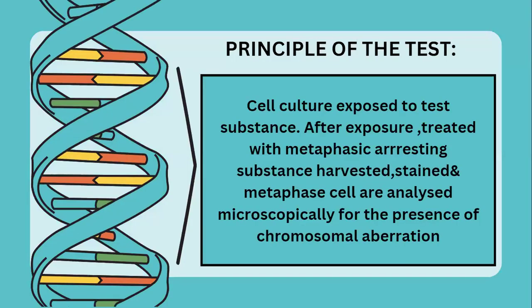The principle of this test involves exposing a cell culture to a test substance. After exposure, it is treated with a metaphase-arresting substance. The cells are then harvested and stained with specific dyes. Metaphase cells are analyzed microscopically for the presence of chromosomal aberrations.